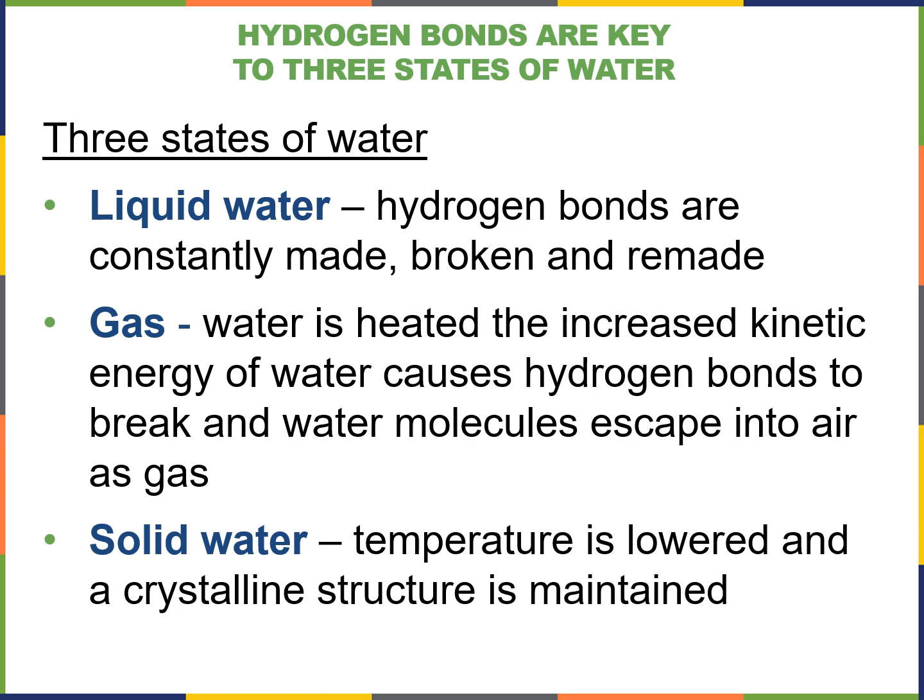The state of water — how fast the molecules are vibrating, not moving as in a stream or river, but just vibrating — will determine what state that water is in. Liquid water, like what flows out of your faucet and exists in pools, lakes, and rivers: the molecules are vibrating and constantly in motion. As they're moving, hydrogen bonds are being made and hydrogen bonds are being broken.